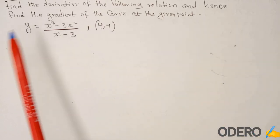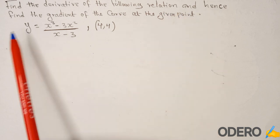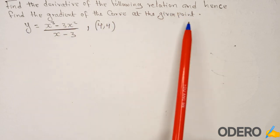Hello and welcome back. Today's question reads like this: find the derivative of the following relation and hence find the gradient of the curve at the given point.